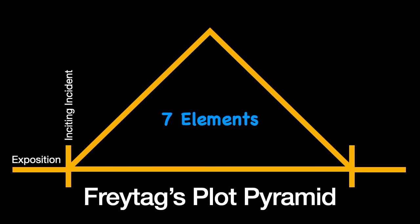Then we have something called the inciting incident. We don't really have a plot without an inciting incident. This is the one thing that happens in the play that sets up the central conflict — the things that stand between a protagonist and what that protagonist wants. We'll call those things complications later on.